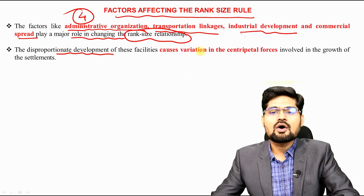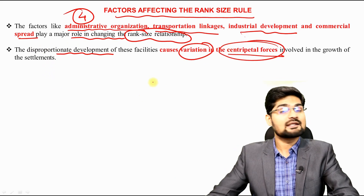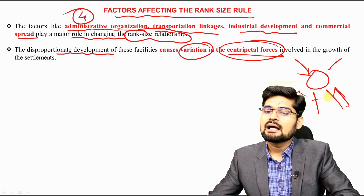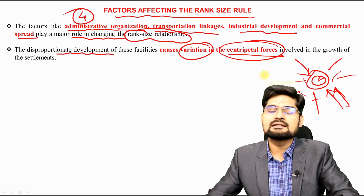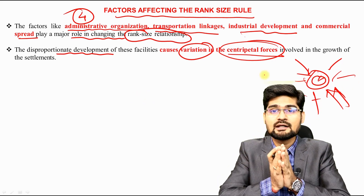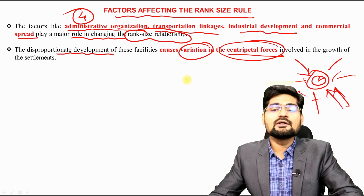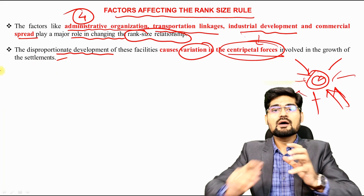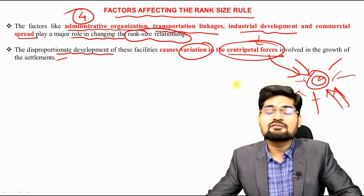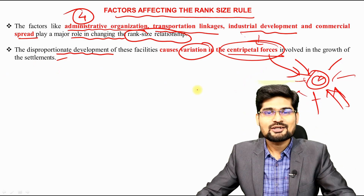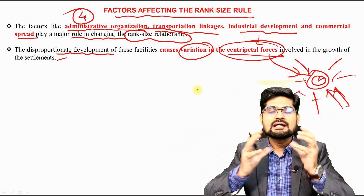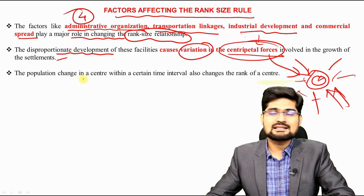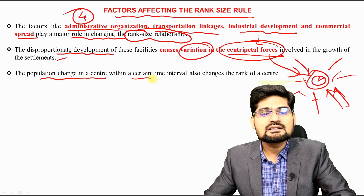Disproportionate development of these facilities causes variation in centripetal forces — forces that bring resources and people inward toward the center. To grow a big primate city, centripetal forces have to be of the greatest intensity. The concentration of wealth, resources, and people at one city leads it to become a primate city.